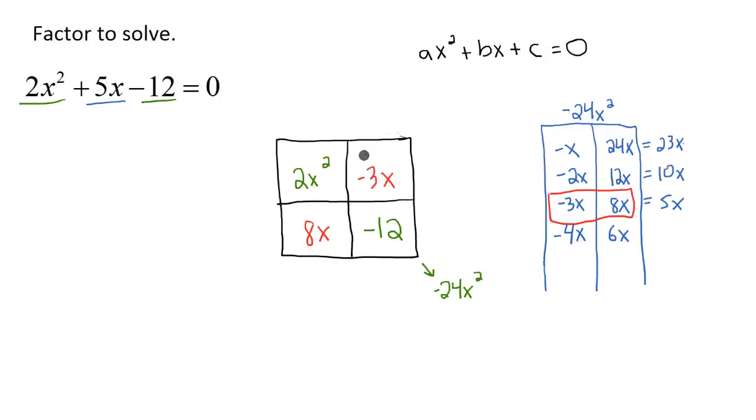Now I'm going to find the greatest common factor between these two terms in the row. The GCF between these two terms is going to be just an x. The GCF between these two terms, 8x and negative 12, is going to be 4. The GCF between these two terms here is going to be a 2x.